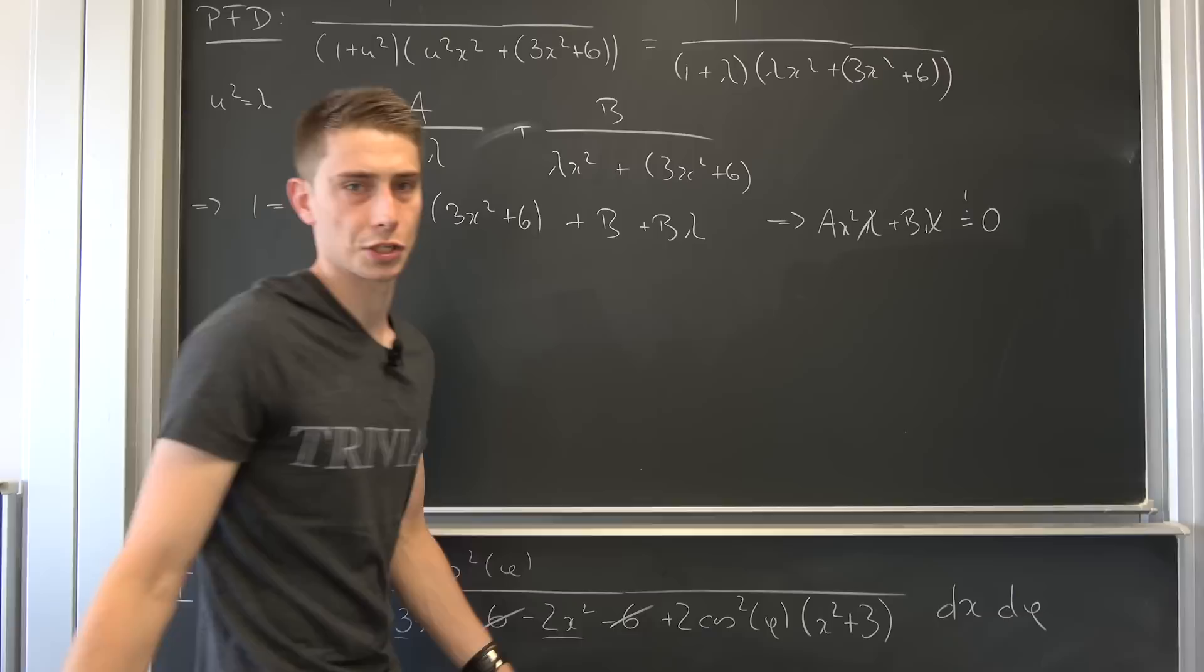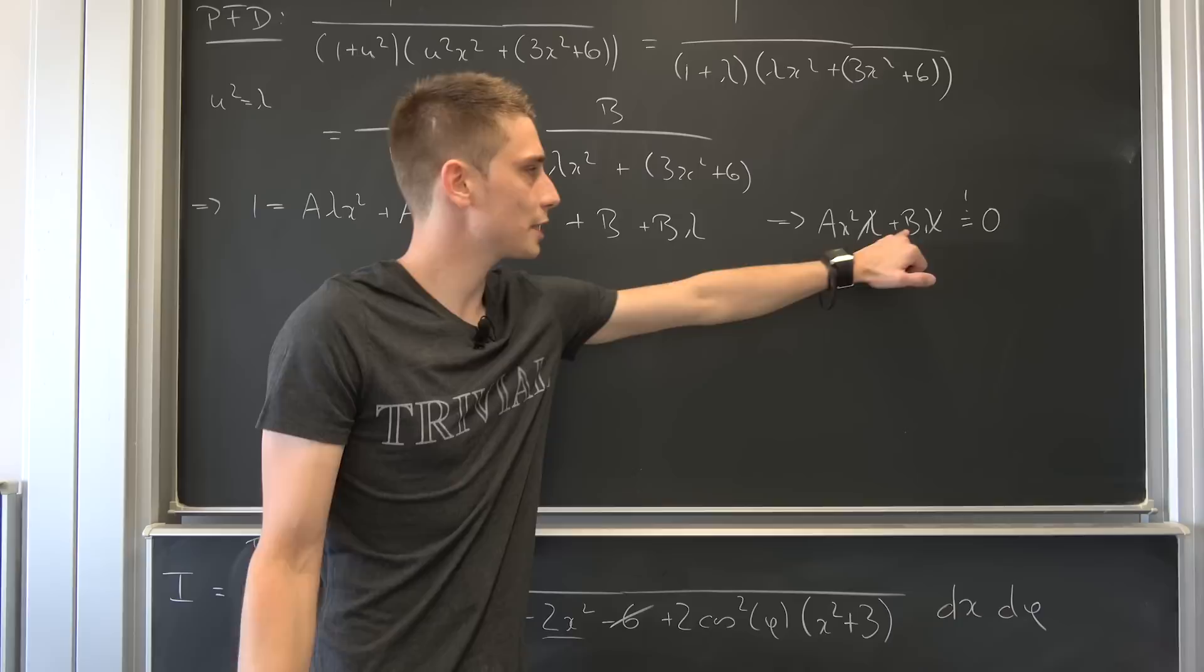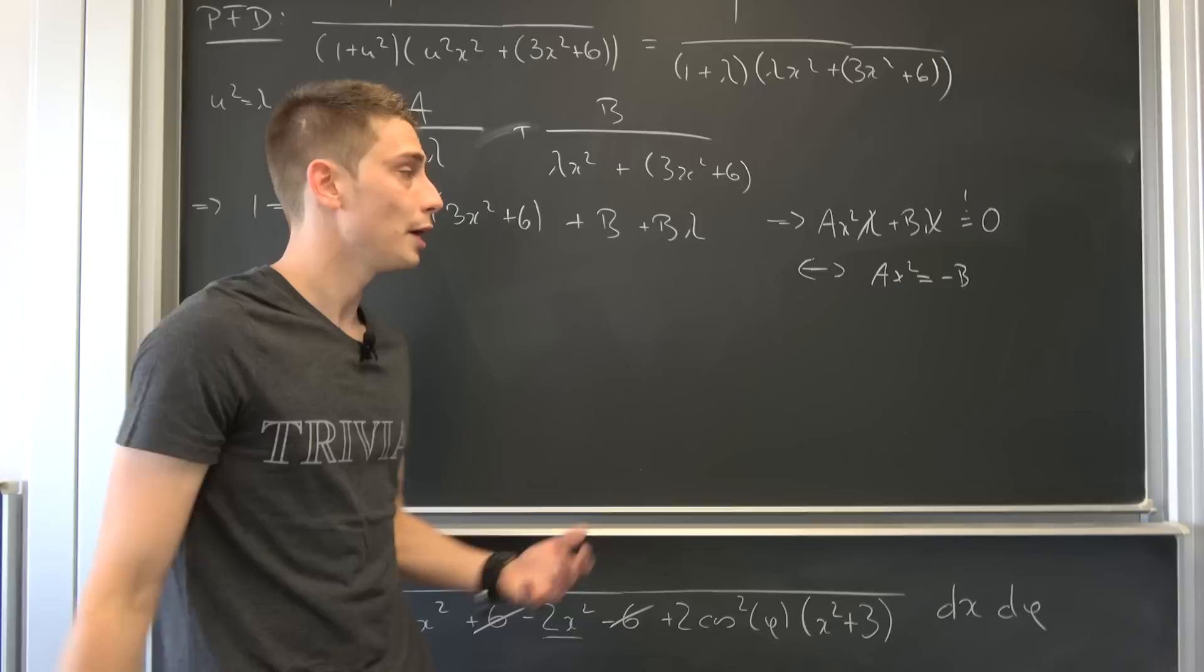So we don't want to take a look at lambda right now, so that means we can just compare coefficients and let's subtract B on both sides. We can do this. So A x squared is nothing but negative B, or B being nothing but negative A x squared. And now we can just plug the stuff into here actually.